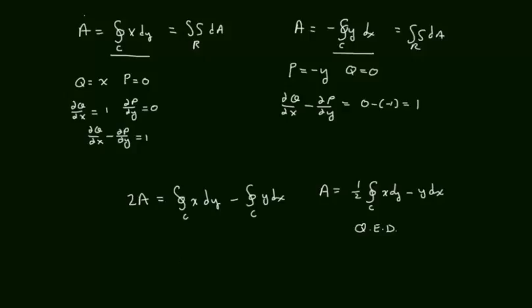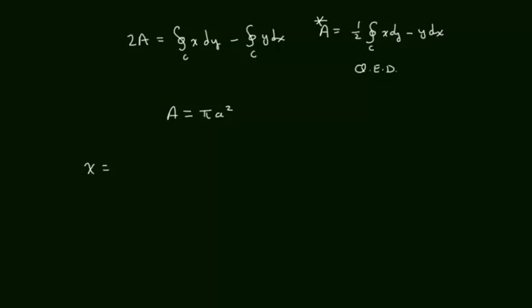Can you use that to prove that the area of a circle with radius a equals pi a squared? Come up with a parameterization for a circle: x equals a cosine t, y equals a sine t, t between 0 and 2 pi. Then dx equals negative a sine t dt, dy equals a cosine t dt.